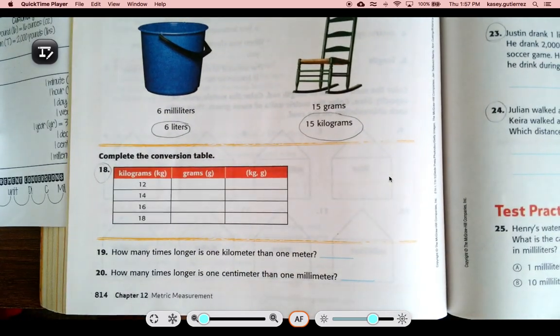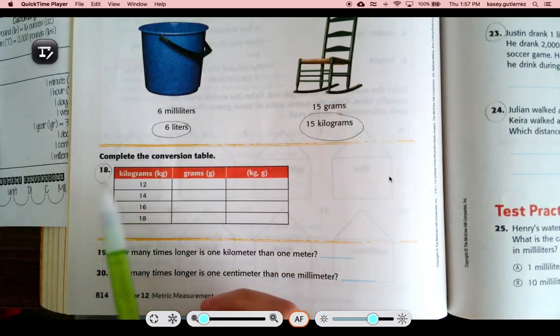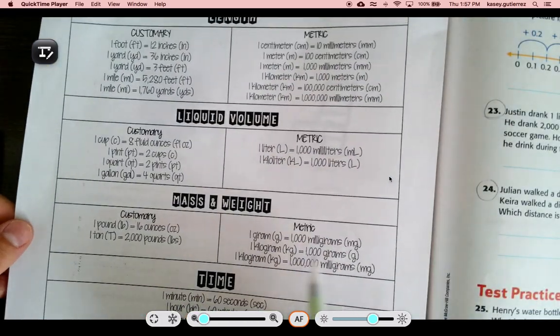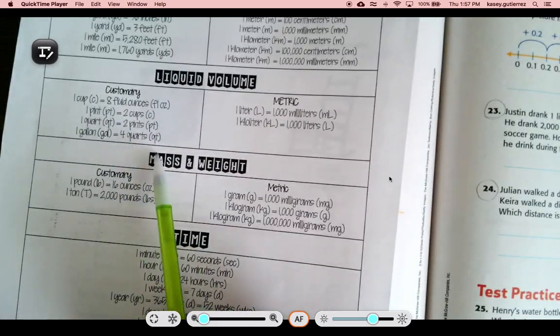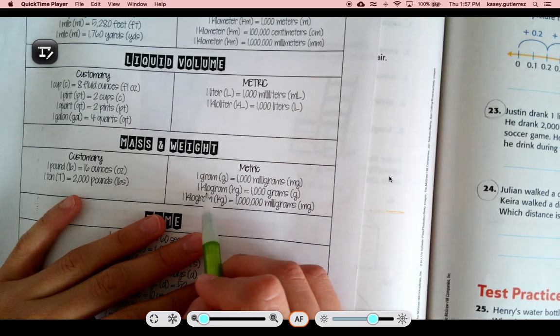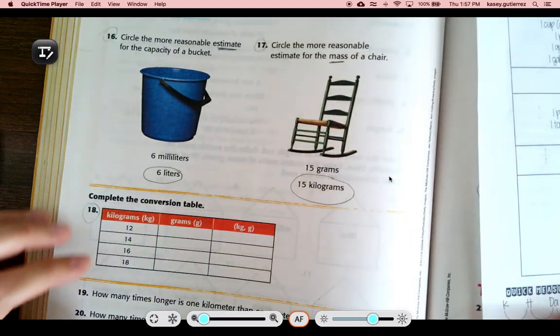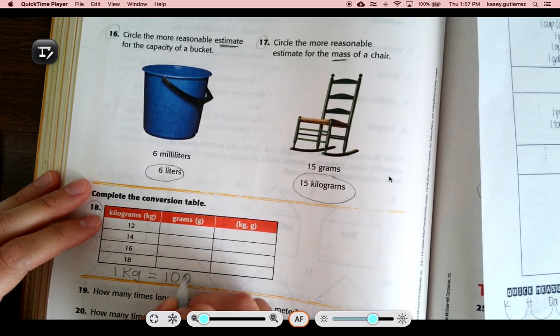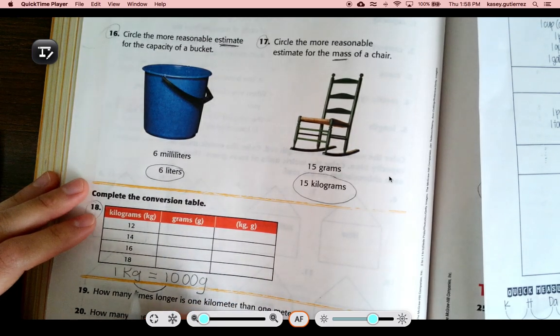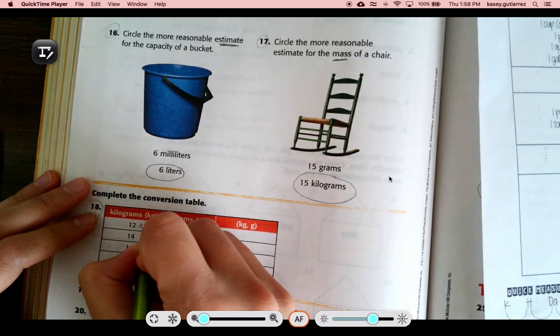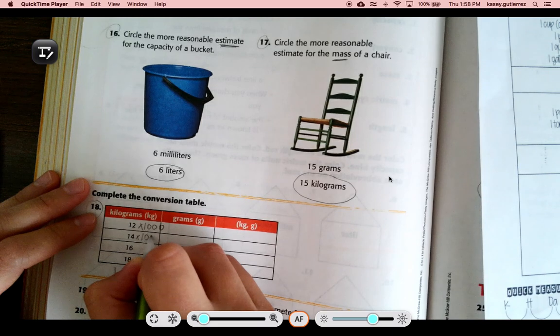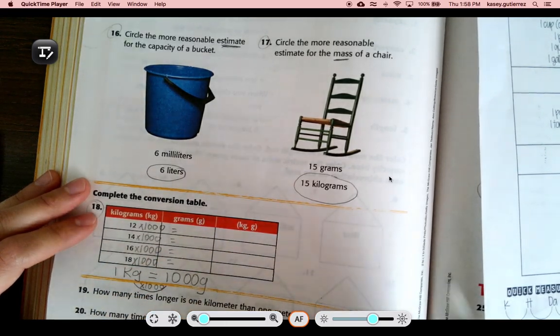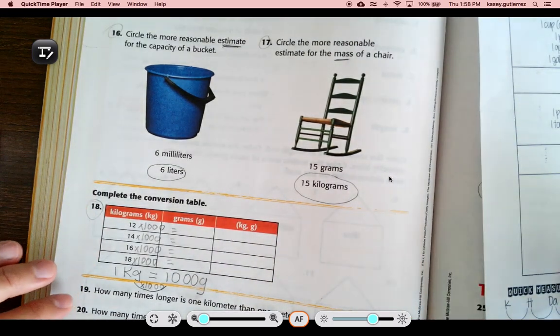Number 18 says complete the conversion table. We do this a lot. So I have my conversion sheet with me. It says kilograms to grams. I'm going to find kilograms and grams. We're talking about mass. It says 1 kilogram equals 1,000 grams. So to get from here to here, you're going to multiply by 1,000. So you're going to do the same thing to all of these. Multiply by 1,000 to get how many grams, or how many little paper clips.